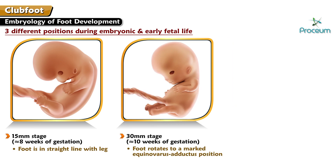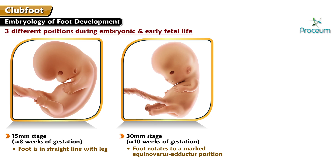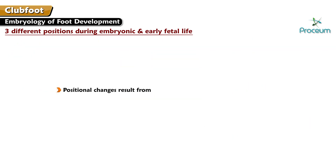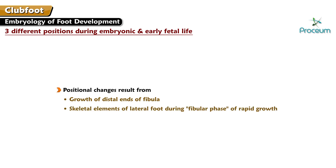the foot rotates to a marked equinovarus adductus position, and then by the 50mm stage, approximately 11.5 weeks of gestation, it changes to a slightly equinovarus adductus position which remains throughout fetal life. These positional changes result from the growth of the distal ends of the fibula and the skeletal elements of the lateral foot during the fibular phase of rapid growth.